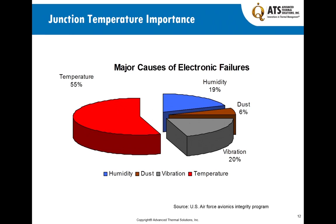This is data from the U.S. Air Force showing that the major cause of electronics failure is certainly temperature, and humidity plays a role right alongside it, with vibration, dust, and other issues contributing as well. But temperature is the biggest source of failure. So management of temperature and minimization of junction temperature has a more successful outcome as far as your product is concerned.